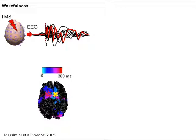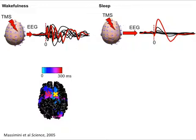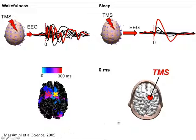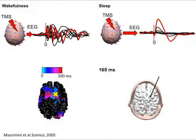Now, what happens a few minutes later when the same subject is in deep sleep and unconscious? Stimulation is the same — same intensity, same everything — except the subject is unconscious. The brain is still reactive; actually the response is even larger. It is a positive-negative wave. But critically, you have a strong activation under the stimulator that remains local, stereotypical, and localized to the stimulated module — as if connectivity is broken down. The thalamocortical system behaves as a system that is not integrated.